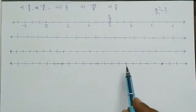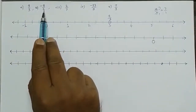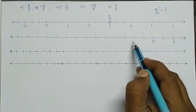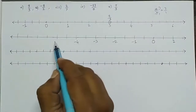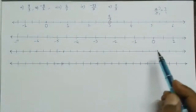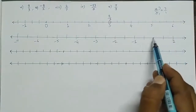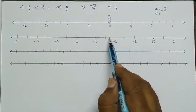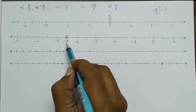Next: minus 9 upon 2. We take 0 and make 2 equal parts per unit. Going negative: minus 1 by 2, minus 2 by 2 (which is minus 1), minus 3 by 2, minus 4 by 2 (minus 2), and continuing: minus 5, minus 6, minus 7, minus 8, minus 9 upon 2. So minus 9 upon 2 is located here on the negative side.